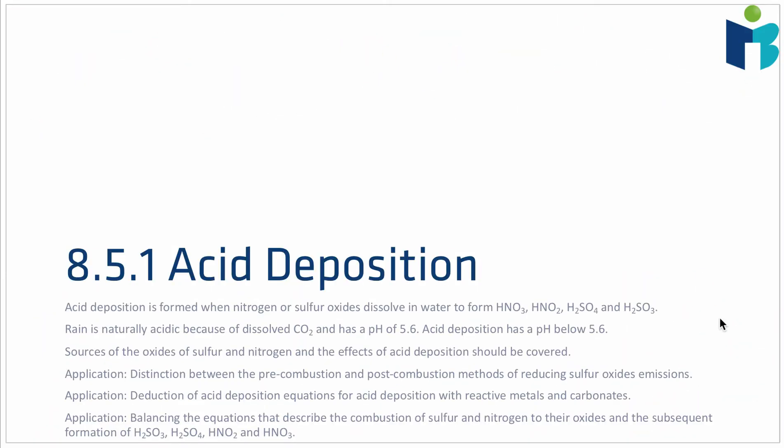In this video we're going to talk about the chemistry of the formation of acid rain — exactly where the species that result in acid rain come from, methods we can look to decrease the presence of these species, and then the effects that acid rain can have.